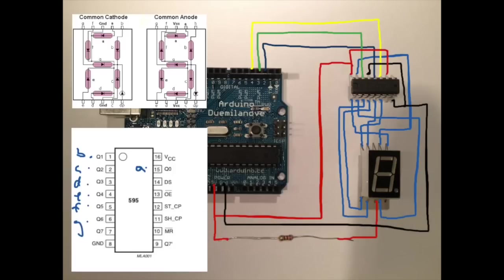We will also connect the MR master reset pin or pin 10 to plus voltage, plus 5 in this case. So this is our circuit all connected and ready to go. Let's go through how to send numbers to the seven segment LED display using a 595.